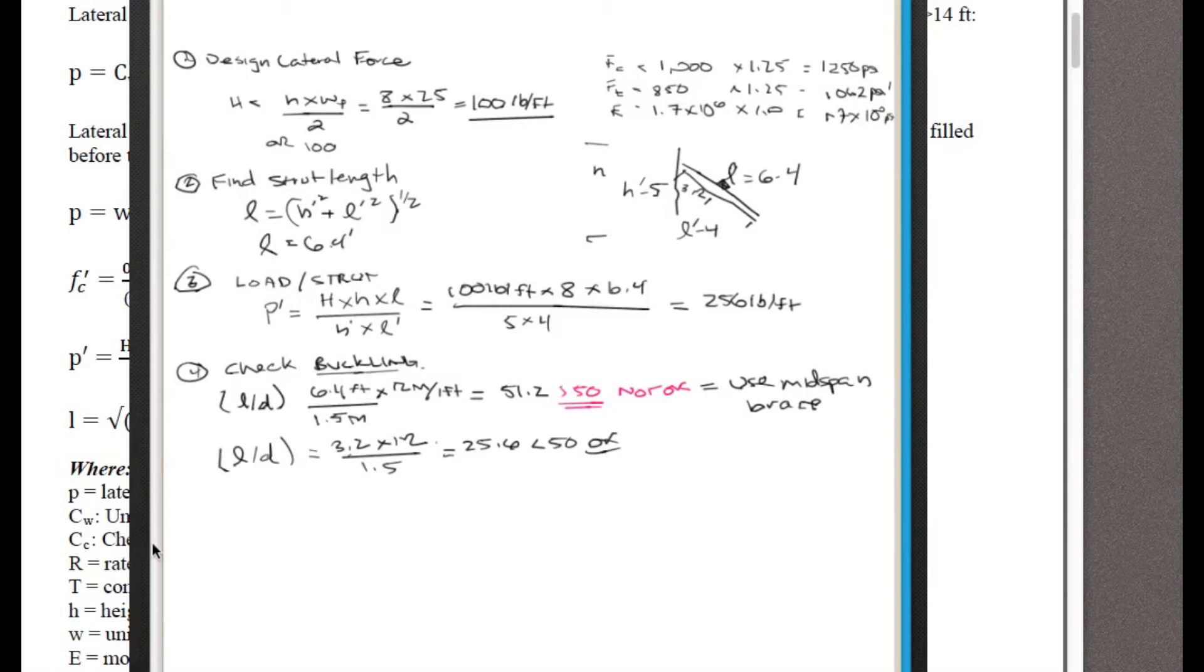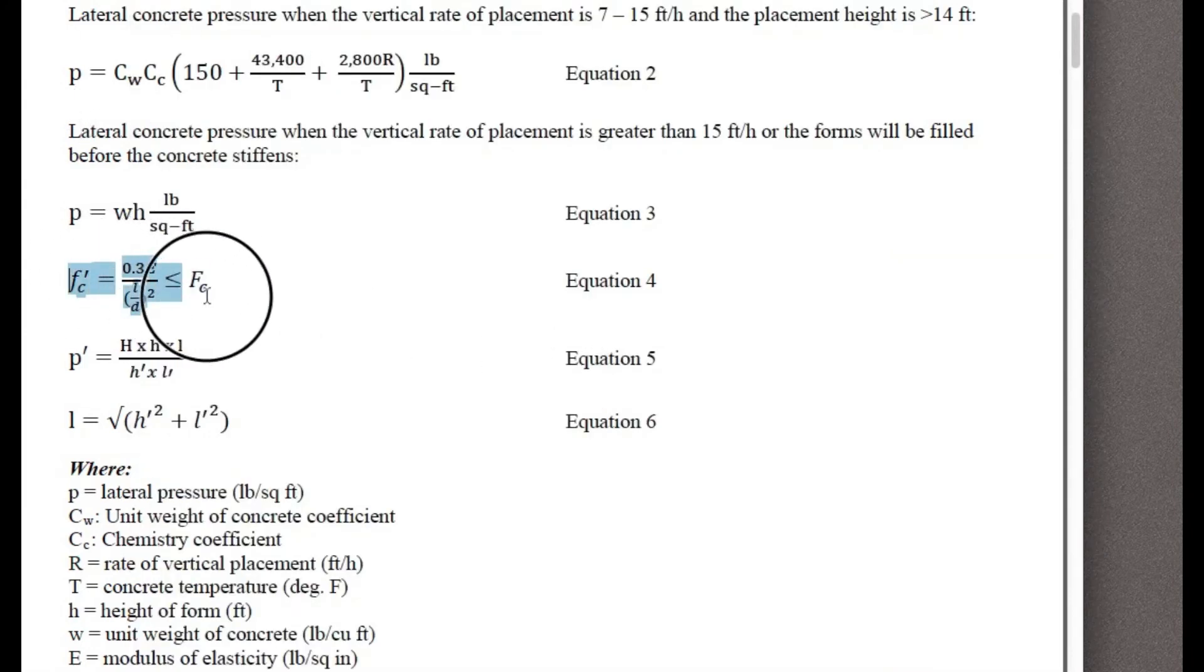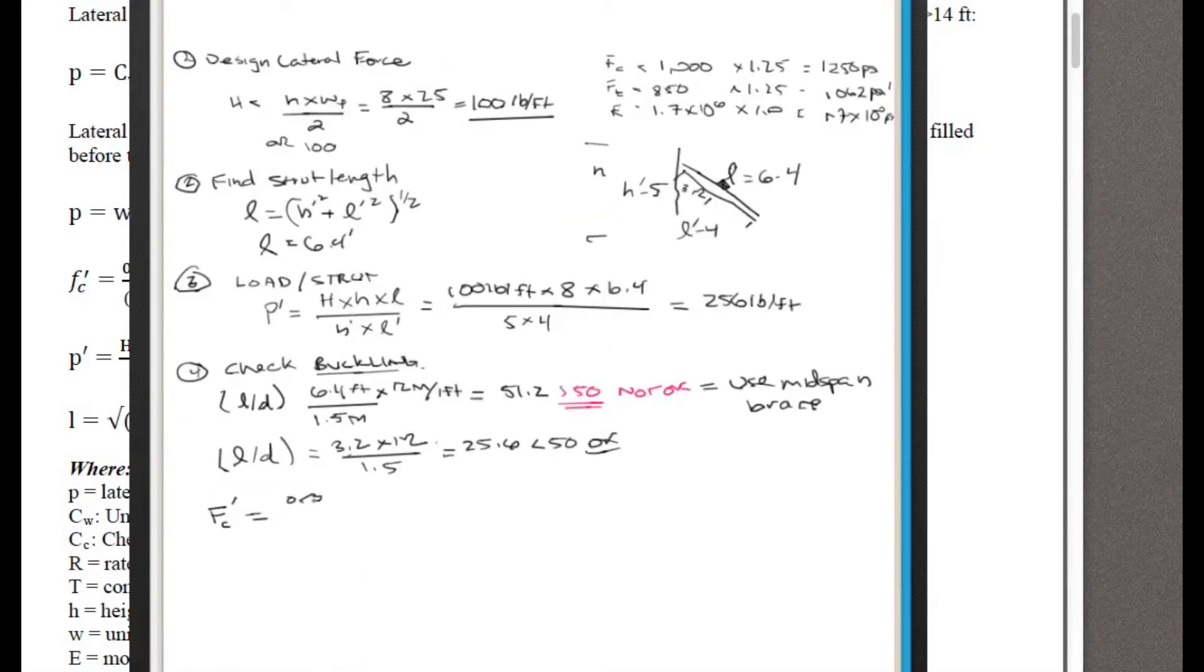So now for buckling, now that we've checked slenderness, let's actually check what the max capacity of this member is in buckling. So that is this value, fc prime, which, going here, is this equation here. This 0.3E over slenderness ratio squared. So we use that equation, 0.3E divided by L over D squared. And we get 0.3 times our E, which is up here, 1.7 times 10 to the 6, divided by our new L over D, which is 25.6 squared, since this is braced. And we get 778.2 psi.